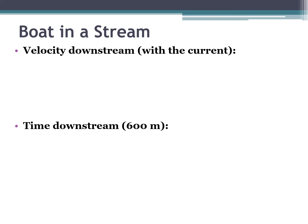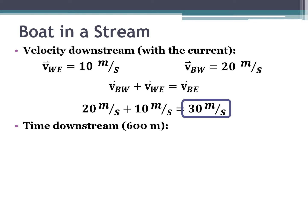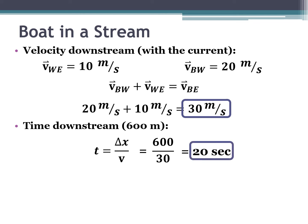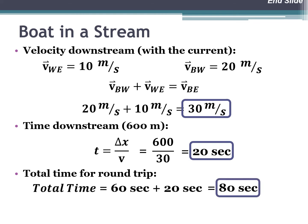Going downstream means the boat is going with the current, so the water is again 10 meters per second and the boat is positive 20 meters per second — same direction. Adding them gives 30 meters per second. A higher velocity means less time than upstream. Using time equals displacement divided by velocity: 600 divided by 30 gives 20 seconds downstream. The total round-trip time is 60 seconds upstream plus 20 seconds downstream, equaling 80 seconds.